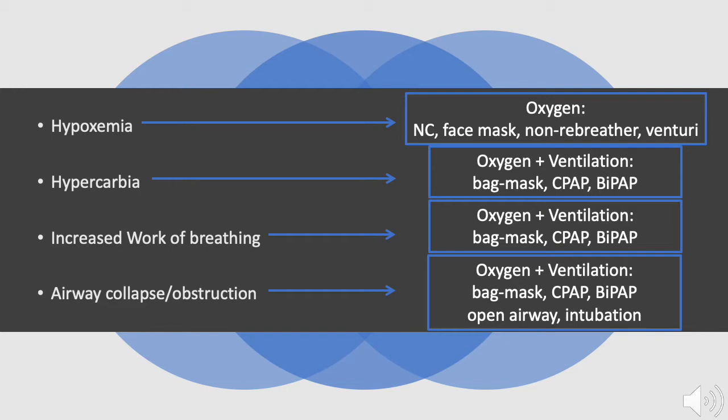If the patient is hypoxic, they need supplemental oxygen therapy. The provider must monitor using pulse oximetry and decide which oxygen delivery device is most appropriate for the patient. Adult patients can receive supplemental oxygen by nasal cannula, simple face mask, non-rebreather face mask, or venturi face mask.